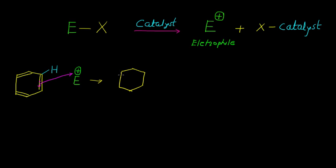In this intermediate, the bonds which are present in the benzene ring will remain as they are. This hydrogen will remain as it is on this carbon atom. The only change is with respect to this carbon and the electrophile, and simultaneously there is a formal positive charge on this carbon atom. So this intermediate is not a stable one.